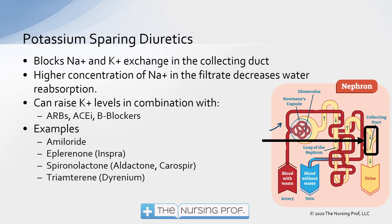Potassium-sparing diuretics work in the collecting duct, blocking the sodium-potassium exchange there. This leads to a higher concentration of sodium in the filtrate, which causes more water to follow, producing diuresis. However, they can lead to high potassium levels when used in combination with ARBs (angiotensin receptor blockers), ACE inhibitors, or beta-blockers — any one of those three medications can raise potassium levels in combination. Spironolactone is a common example; it has been found to improve fluid and water balance in elderly patients and may help prevent falls compared to loop or thiazide diuretics.